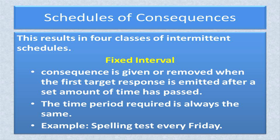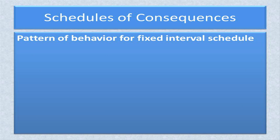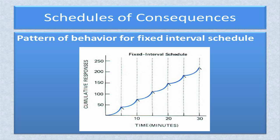An example of the use of this schedule is a spelling test every Friday. No matter how much a student may study the spelling words, the opportunity for reinforcement does not arrive before Friday. The pattern of behavior for a fixed interval schedule shows what is called a scalloping effect. That is, the rate of behavior increases until just before that opportunity to be reinforced. Once that has passed — the spelling test is given — the behavior stops and begins to increase again as the time for possibly receiving reinforcement nears.